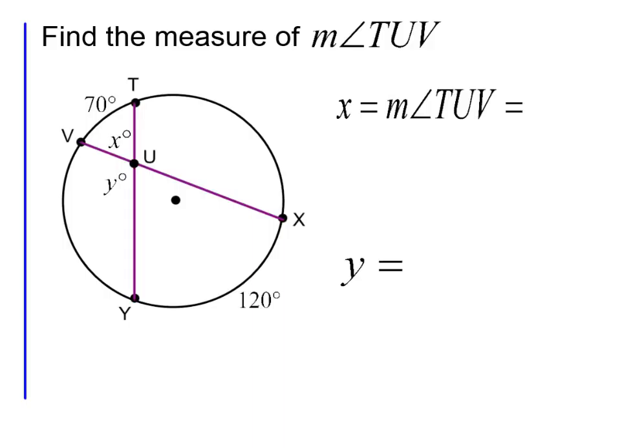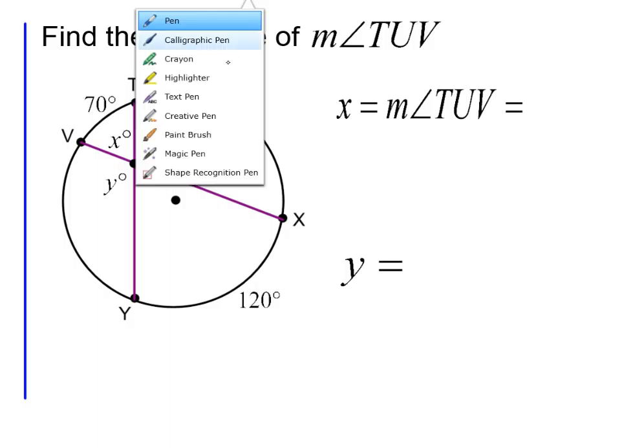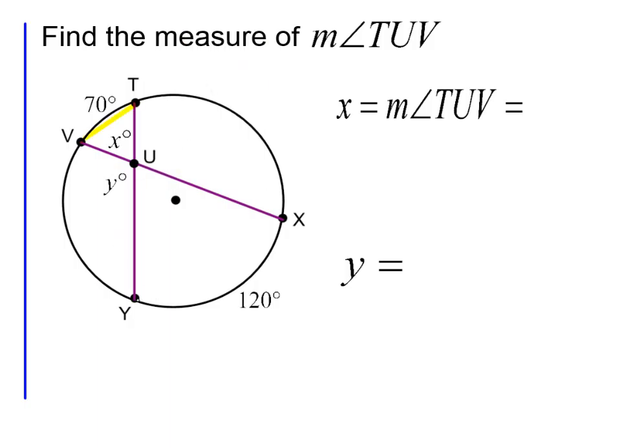Let's use this formula to discover these measurements. We want to find first the value of x, which is angle TUV. What are the important parts of this circle that will help me figure out that angle? It'd be the arcs. Arc TV and arc UX are the arcs I'm going to use. So my big arc is 120 degrees and my smaller arc is 70. I divide these by 2 and I'll get my answer. My angle is 95 degrees.